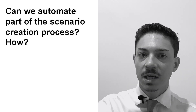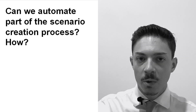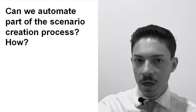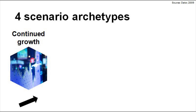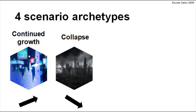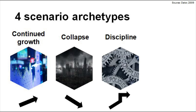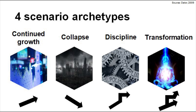To answer this question, we started from the scenario archetypes method, or 4 generic futures, a famous foresight methodology created by futurist Jim Dator. It allows us to create possible futures based on 4 predetermined archetypes: continued growth (a future of expansion of the current trajectory), collapse (where the system reaches its limits), discipline (where society finds a new equilibrium and becomes sustainable), and transformation (a radical departure from the present due to a transformative event).